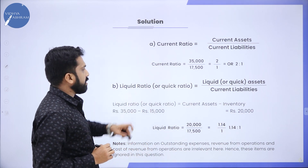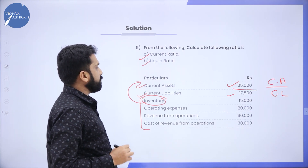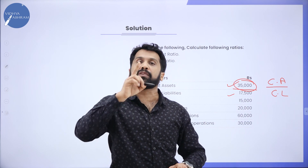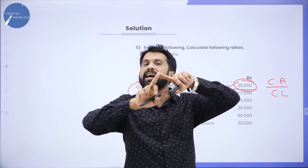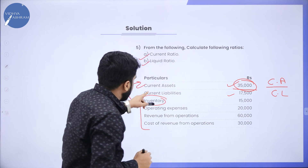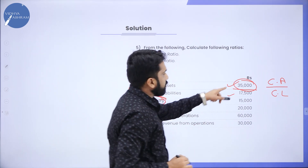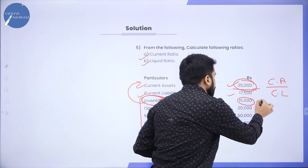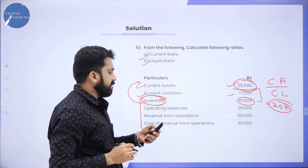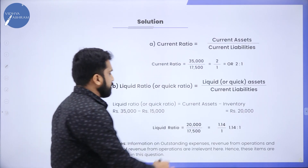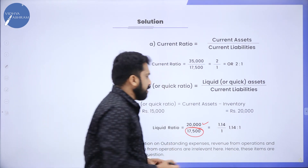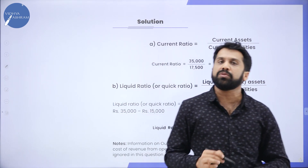Easy! Next is Quick Ratio. Current Asset is 35,000. For Quick Ratio, we subtract two things: Inventory and all Prepaid or Advances. In this problem, there is no Prepaid, only Inventory. So 35,000 minus 15,000 gives Quick Asset of 20,000. Current Liability remains the same at 17,500. Your answer is 1.14 is to 1.